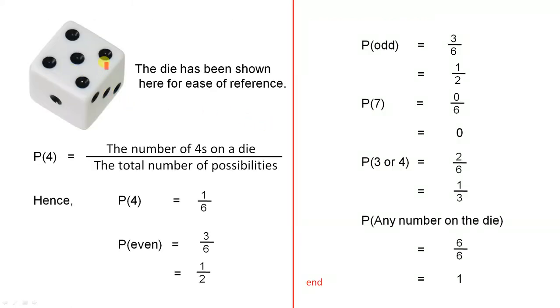So here's the die. I've represented it here again, just for ease of reference. So how do we work out the probability that a 4 will show up when we roll a die? We work out the number of 4s on a die, so how many 4s are there, and we put that over the total number of possibilities. Hence, the probability of rolling a 4 is 1 because there's only one 4, and there are 6 possibilities. So P(4) equals 1 over 6.